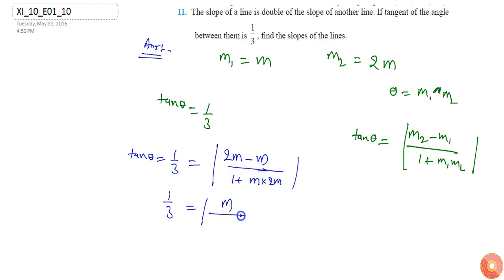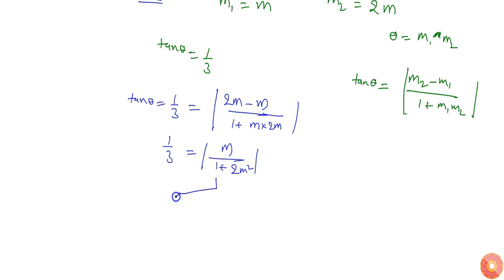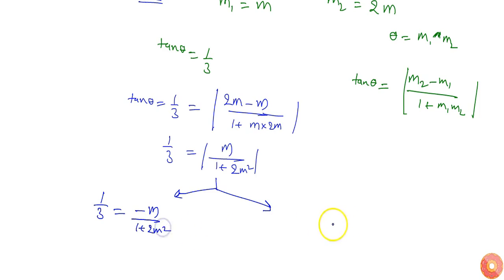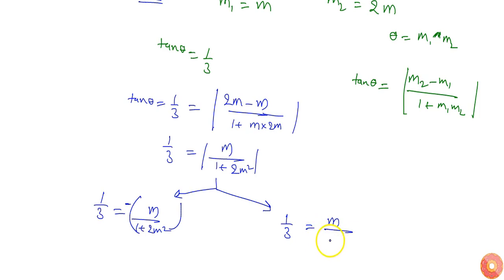Simplifying, we get 1/3 = m / (1 + 2m²). Since it is a modulus function, there are two solutions. The first case gives 1/3 = −m / (1 + 2m²), and the second case gives 1/3 = m / (1 + 2m²).